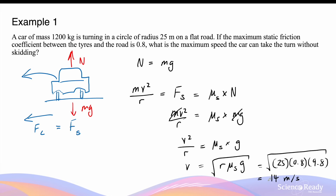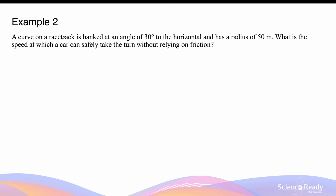If the car's speed exceeds this value, the magnitude of friction — which is the centripetal force — would not be sufficient to accommodate the greater speed. In that case the car would no longer be in circular motion around the bend and would start to skid off the road. A curve on the racetrack is banked at an angle of 30 degrees to the horizontal and has a radius of 50 meters. What is the speed at which the car can safely take the turn without relying on friction?